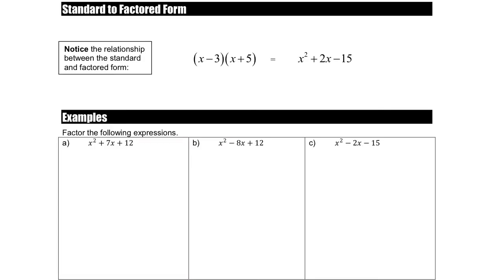To understand factoring, I want to first look at expanding. If I took an expression like this, in Spiral 2 we looked at expanding the brackets to turn it into standard form. We multiplied each term in one bracket by each term in the other: x times x gives x squared, x times 5 is 5x, minus 3 times x is minus 3x — so 5x minus 3x is 2x. Then minus 3 times positive 5 is minus 15. So when we expand these brackets, that is our answer. Factoring is starting with this and working backwards to get the factored form.